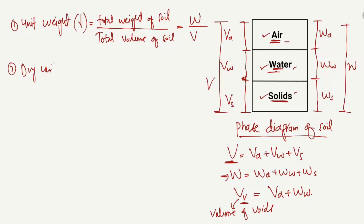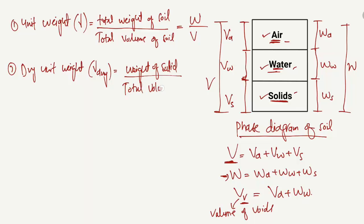The dry unit weight of the soil is represented by γ_dry, and it is equal to the weight of solids (WS) divided by the total volume of soil (V). So γ_dry = WS / V. This gives us the dry unit weight of the soil sample.